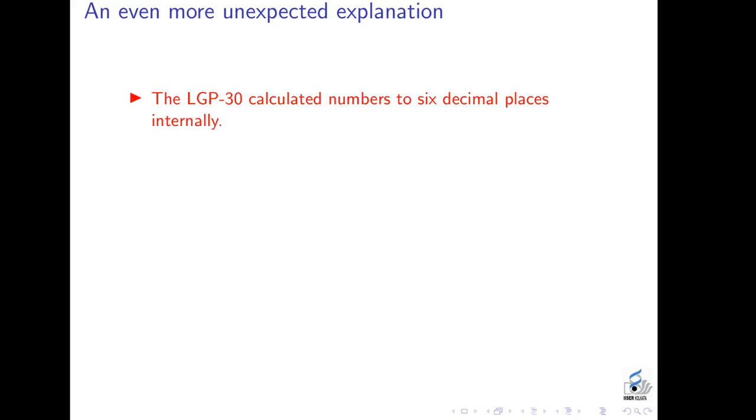The RGB30 calculated numbers to six decimal places internally. However, because of shortcomings of the hardware, it only printed out three decimal places. Calculating to six decimal places internally and printing out three decimal places is actually often a very good idea because very often when you calculate up to a certain fixed number of decimal places, the last few digits may become unreliable. On the other hand, you must realize that when Lorenz ran his full simulation beyond the midpoint, the computer was internally using the six decimal places values it had, whereas Lorenz, when he broke it out, gave it only three decimal place values that he had in the printout.